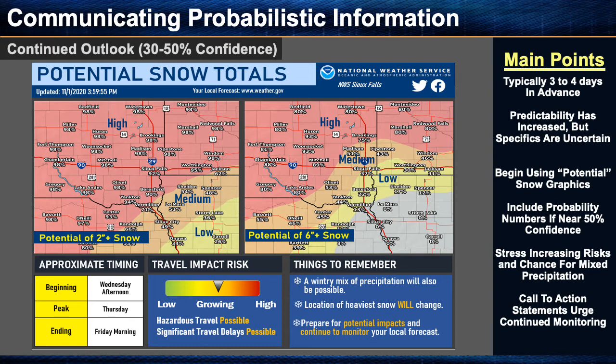As your confidence begins to grow in both storm occurrence and aspects of the forecast, the next stage is the continued outlook stage, where you continue providing an outlook and may begin increasing your IDSS services. Typically confidence at this stage ranges from 30 to 50 percent, which in a synoptically driven system takes place within the three to four day time frame. It's important to remember that your messaging should be driven by your confidence level and not directly tied to the storm timeline. By this stage your storm predictability has increased, but individual forecast specifics like precipitation type, location, timing, and amounts may remain hazy.